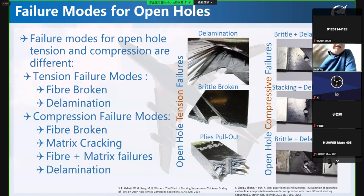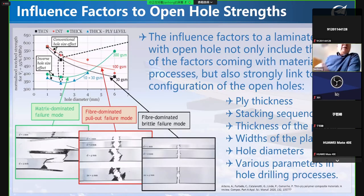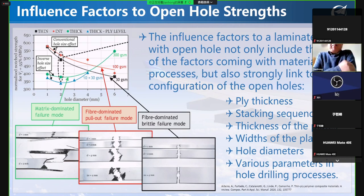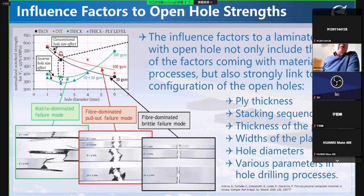For compression failure, it is more complex — dealing with fiber breakage, matrix cracking, fiber-matrix failure, plus delamination. A recent literature review by Professor Camanho in Portugal demonstrated it is even more complicated, because for open hole failure the influence factors include ply thickness, stacking sequence, plate thickness, plate width, hole diameter, various parameters, and the hole drilling process. From my point of view, the machining process is still a gray area that is not strongly studied in academic research.